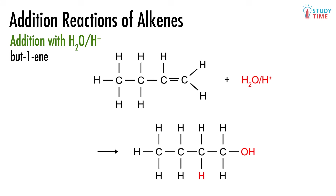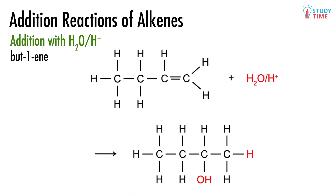Remember the reaction between bute-1-ene and acidified water. The H2O is being split up in this addition reaction. Part of it, an H atom, gets added to one carbon and the remaining part, the OH, gets added to a different carbon atom. The alcohol that we have formed here is butan-1-ol. There is a problem however, and that problem comes from the fact that there is another possible product, which happens when the OH gets added to the second carbon, and the H gets added to the first carbon. This is butan-2-ol.